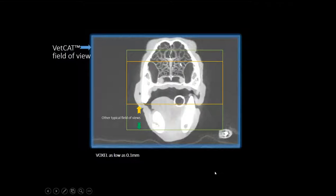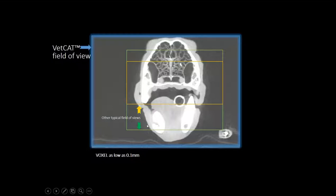The field of view is important for veterinary specialty. We want to have a relatively large field of view. This blue box here shows what we do with VETCAT as compared to smaller ones. Our other unit for humans in private practice does use a slightly smaller detector because of the need. But for dental veterinary application, that larger field of view matters a lot because that's how you're going to capture all the information you need.